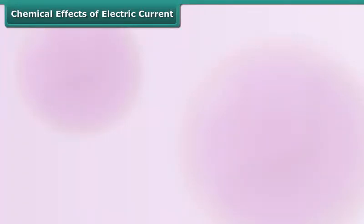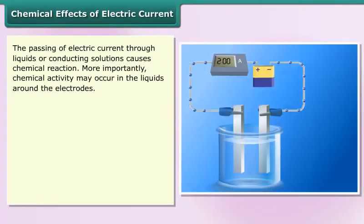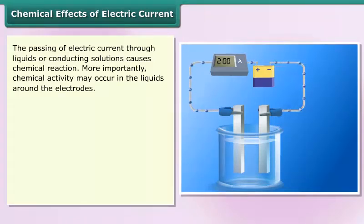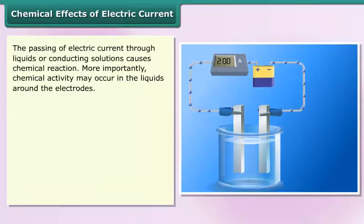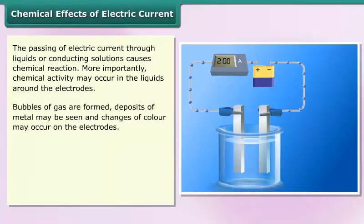Chemical effects of electric current: the passing of electric current through liquids or conducting solutions causes chemical reaction. More importantly, chemical activity may occur in the liquids around the electrodes. Bubbles of gas are formed, deposits of metal may be seen, and changes of color may occur on the electrodes.